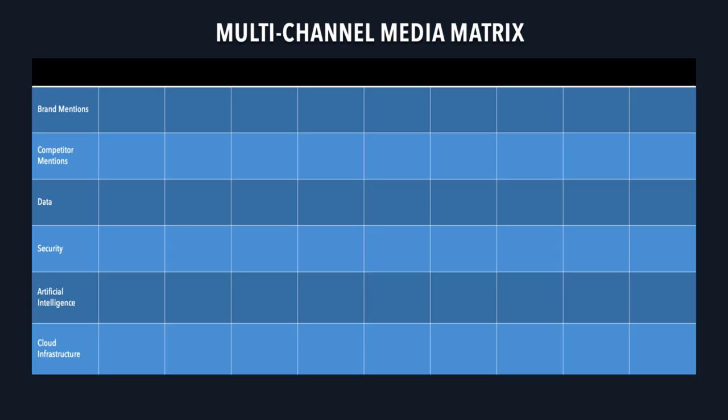So let's go ahead and take a look at how you might do this. I call this the multi-channel media matrix, and it's broken down like this. On the left, you're going to see brand and competitive mentions, and this will obviously be a priority for you as you track media relevancy, reputation, and other brand factors. Also, depending on the line of business you work in, you want to track certain topics that describe the market and the problems that you are trying to solve.